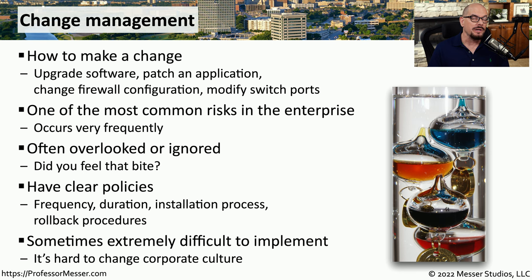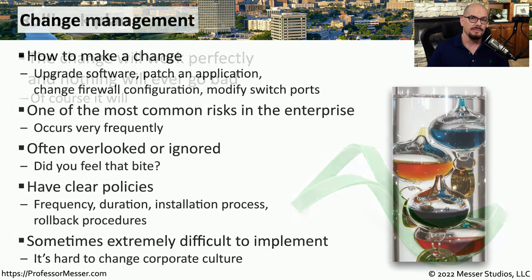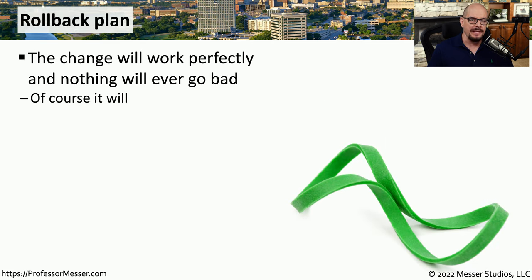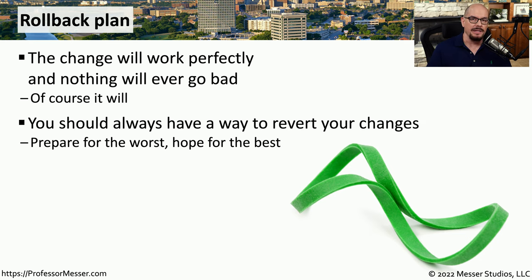If an organization doesn't currently have a change control process, this can be very difficult to implement into an organization that previously had no checks and balances at all. One of the most important parts of any change control process is the ability to go back to a previous configuration. This is a rollback plan, and it should be a well-documented process on how you can implement a change and, if that change doesn't work, go back to the original configuration.